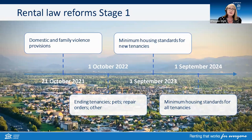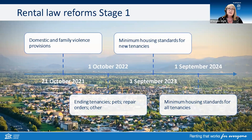A quick history of the rental reforms: it kicked off back in 2018-19 with the Queensland Government's Open Doors to Renting Reform consultation. The Housing Legislation Amendment Act 2021 was passed in October 2021 and implemented in a staged approach. Stage one included domestic and family violence provisions, followed in October 2022 by the framework for negotiating renting with a pet, changes to reasons for ending a tenancy, repair orders, and other amendments. The final part of stage one — minimum housing standards for new tenancies — commenced 1 September 2023, with all tenancies following in 2024. Stage two is next.